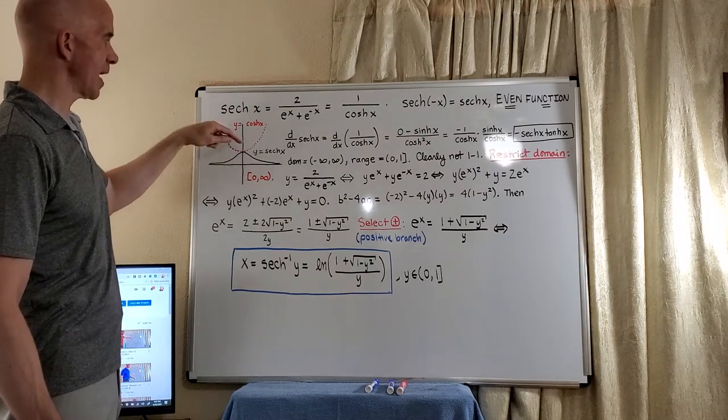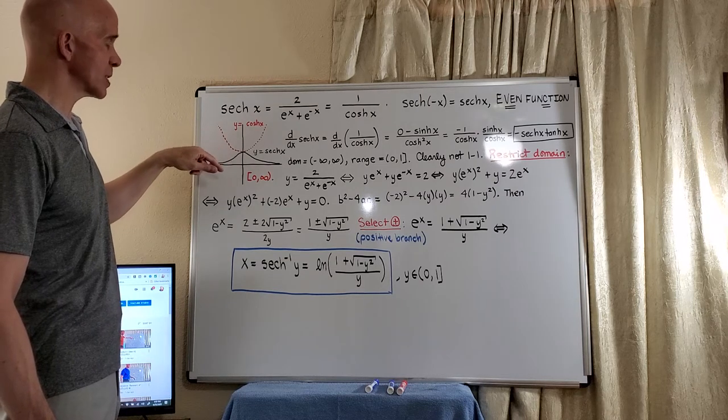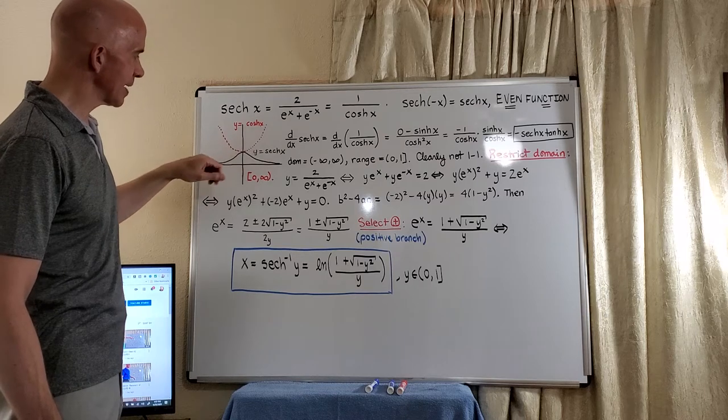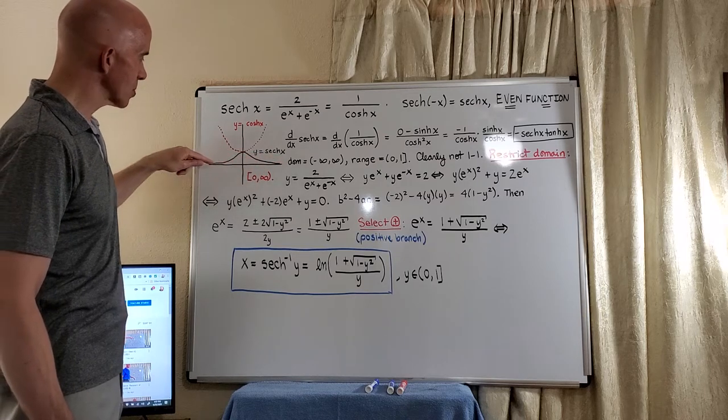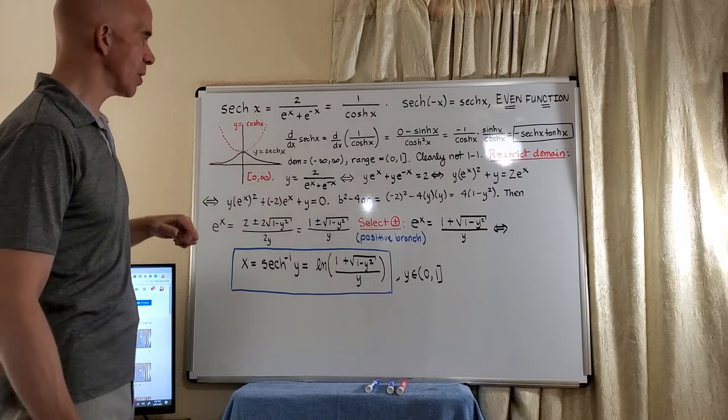And so when we think about the graphs, they're both even. I've dotted in the hyperbolic cosine function here. And when we reciprocate it, we get this curve that looks like a normal curve. That is, we have a horizontal asymptote, y equals zero or the x-axis, and we have a maximum of one.